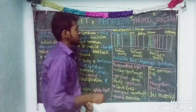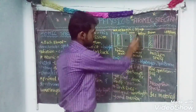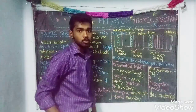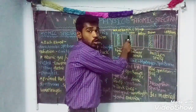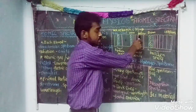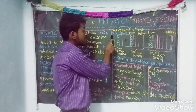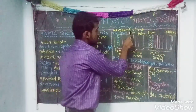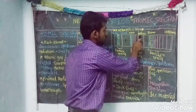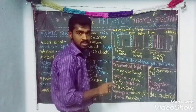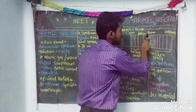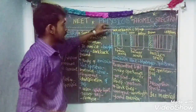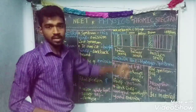If you look at this, the wavelengths are as follows. The first range is 91 nanometers to 122 nanometers — the Lyman series. The next range is 365 nanometers to 656 nanometers — the Balmer series. Then 820 nanometers to 1875 nanometers — the Paschen series.